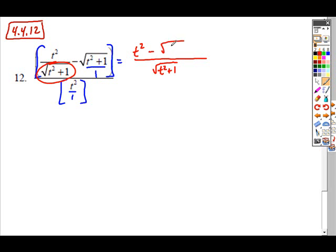Minus the next fraction's numerator, t squared plus 1, and we're going to multiply this by the LCD factor that's missing from its denominator, which is the square root of t squared plus 1. So when you multiply something by itself, you're actually squaring it.